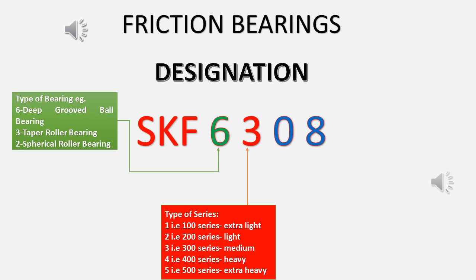The second digit refers to the type of series. For example, 1 would refer to the 100 series, which denotes the extra light series. 2 would refer to the 200 series, which is the light series. 3 would refer to the 300 series, which is medium. 4 would refer to the 400 series, which is heavy. And 5 would refer to the 500 series, which is extra heavy. In our example, the digit 3 refers to the 300 series, that is the medium series.